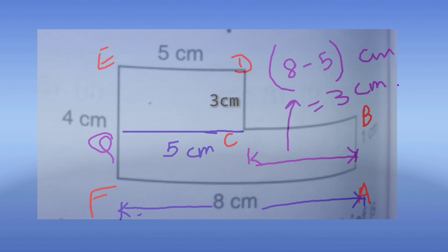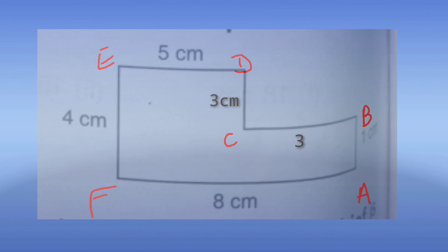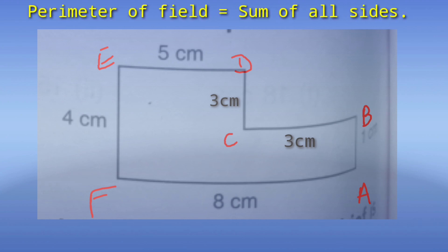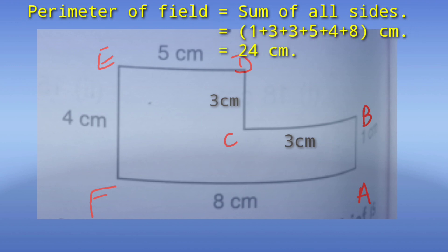Now we have all sides. Adding all sides starting from A: 1 + 3 + 3 + 5 + 4 + 8 = 24 cm. The total perimeter is 24 cm.